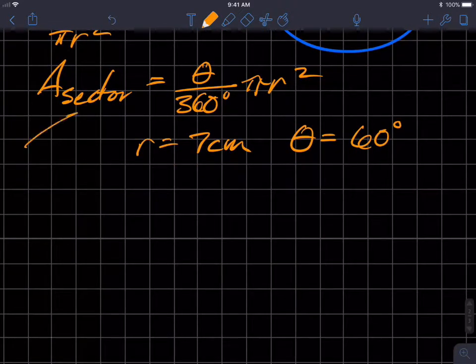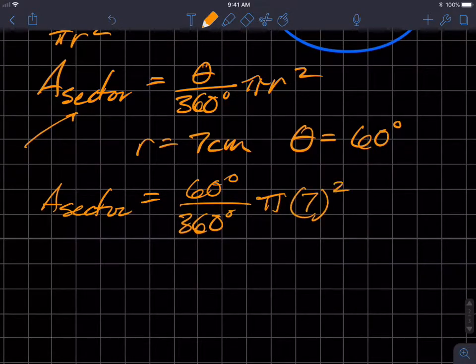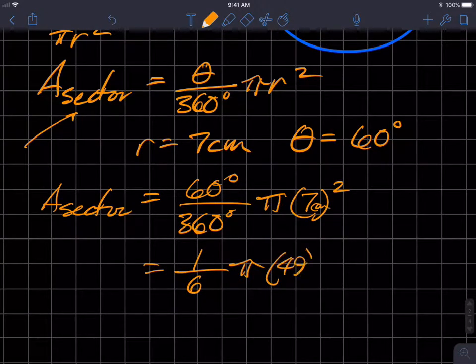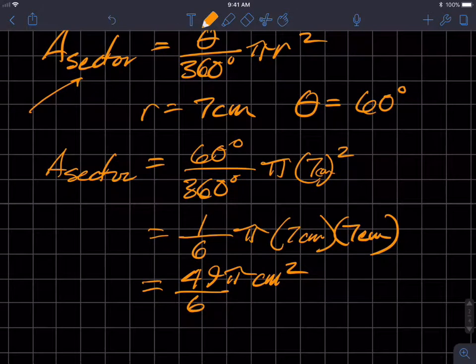We're going to use this equation to calculate the area of the sector. So area of the sector is equal to 60 degrees divided by 360 degrees times pi times seven centimeters squared. And I get 60 degrees by 360 degrees is one sixth of pi times 49 squared. I'm sorry, not 49 squared, seven centimeters times seven centimeters. I'll just write it that way. And then so I get in the numerator 49 sixths pi centimeters squared, and that's my answer.